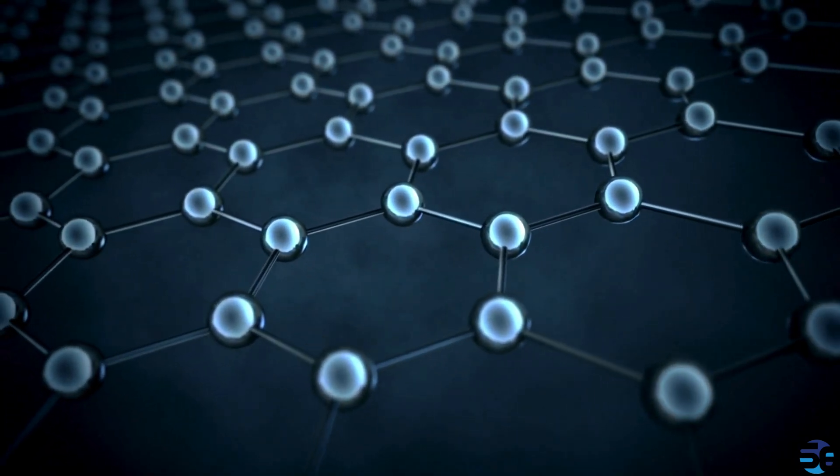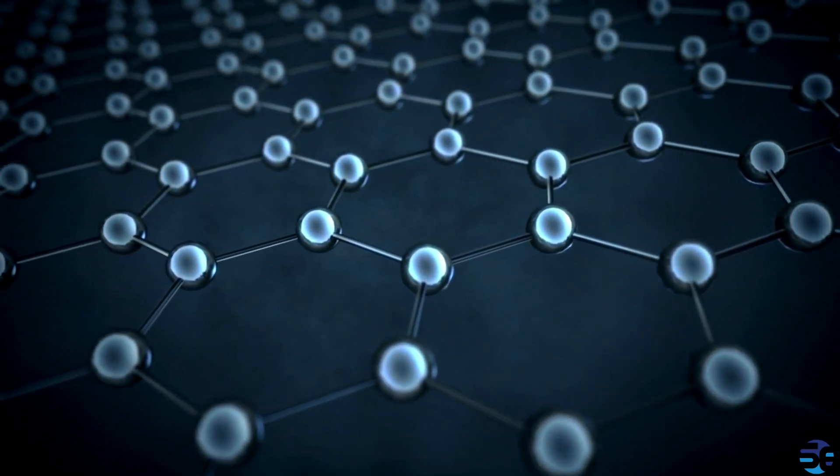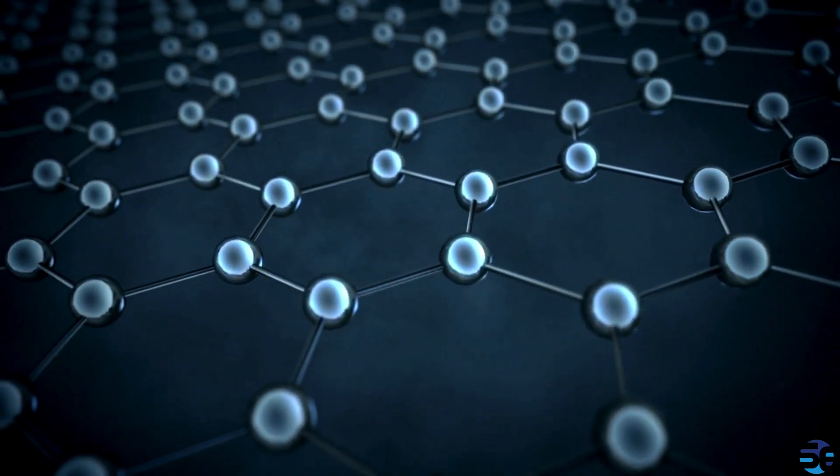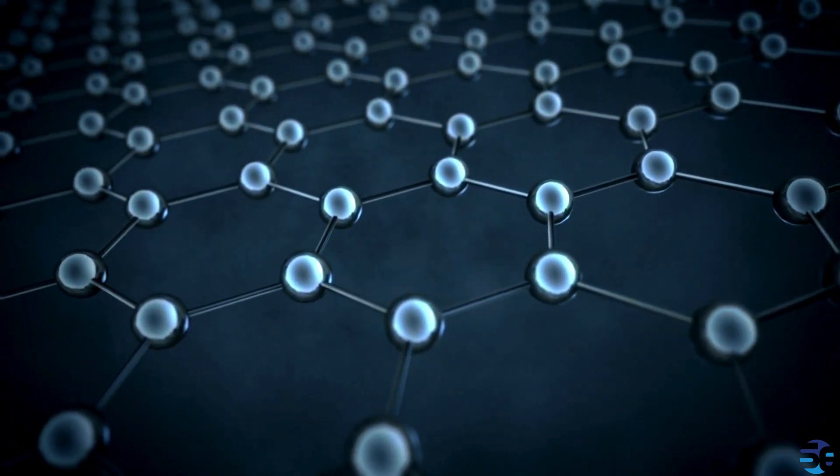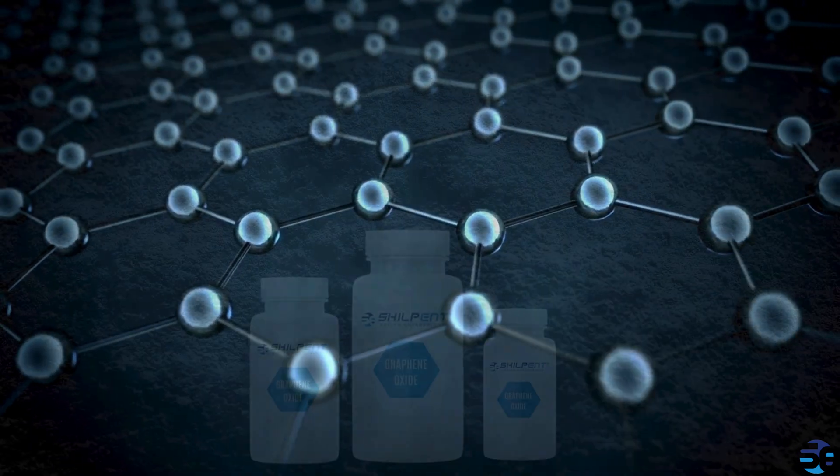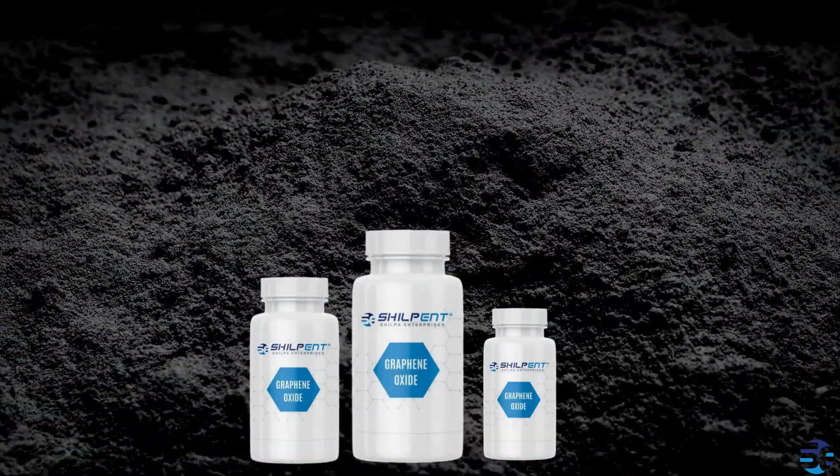Graphene oxide, or GO, is a derivative of graphene, the wonder material composed of a single layer of carbon atoms arranged in a two-dimensional honeycomb lattice. GO is like the versatile cousin of graphene, featuring oxygen-containing functional groups dispersed throughout its structure.